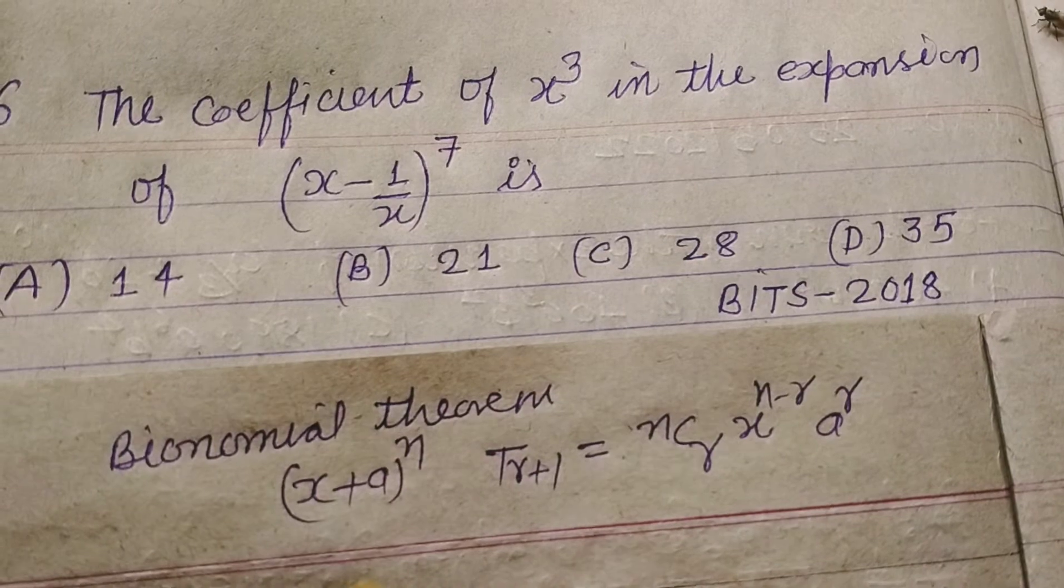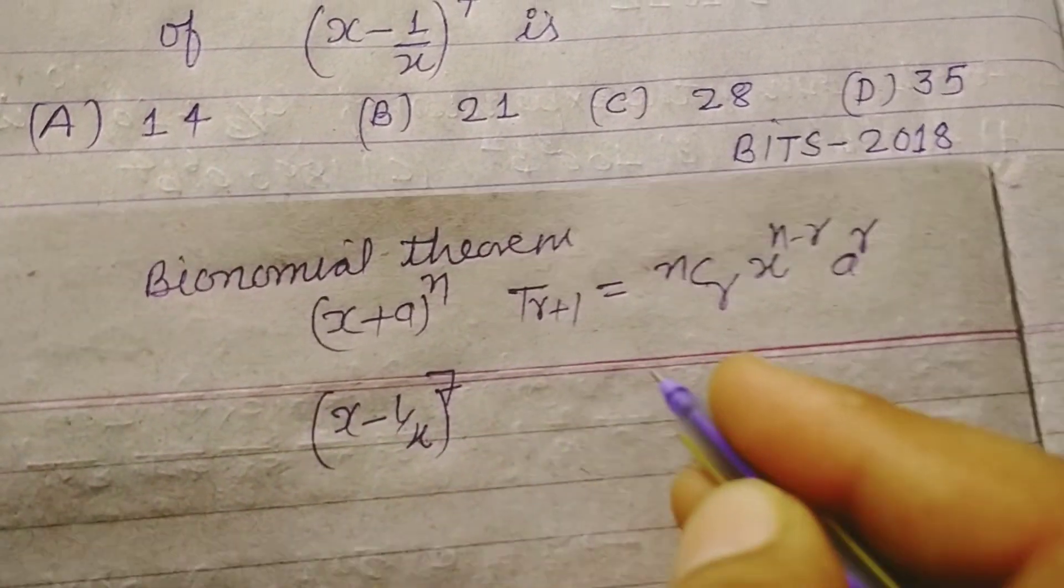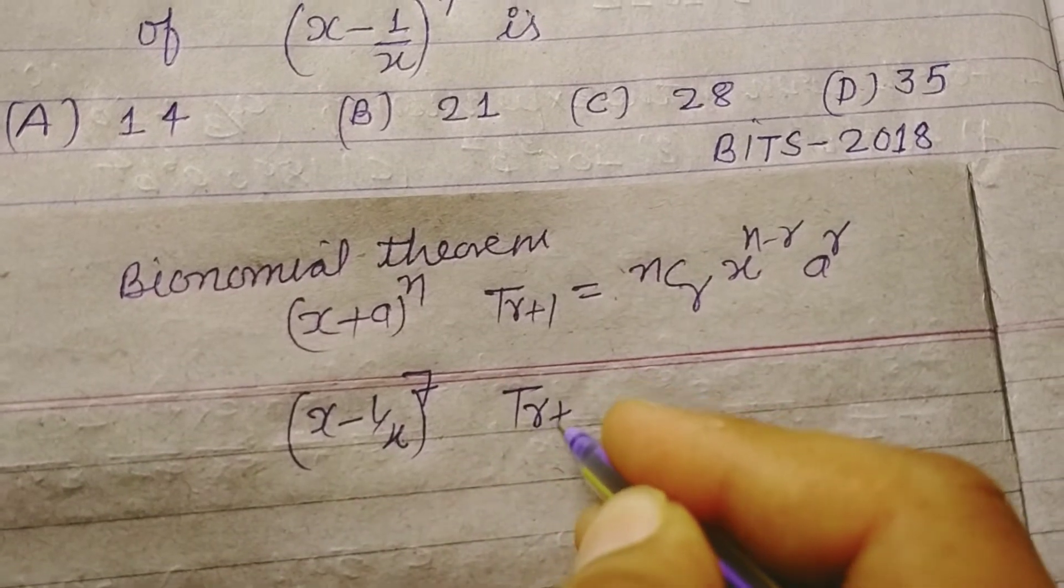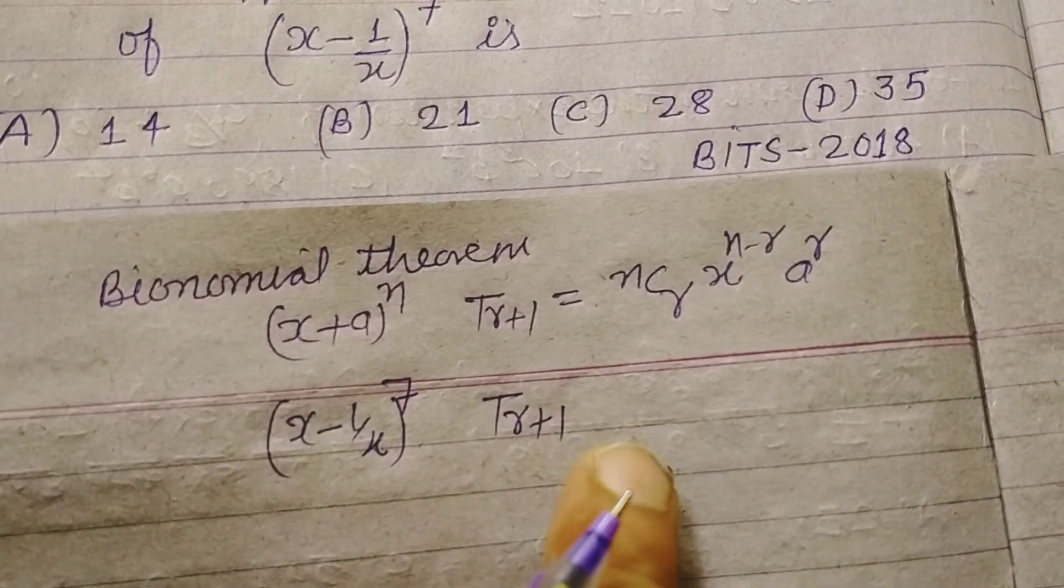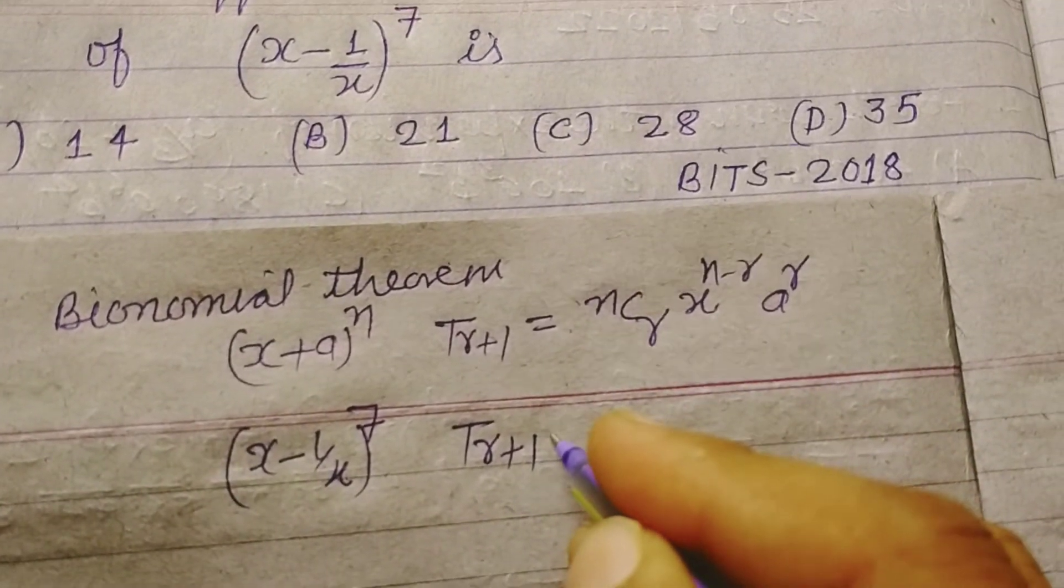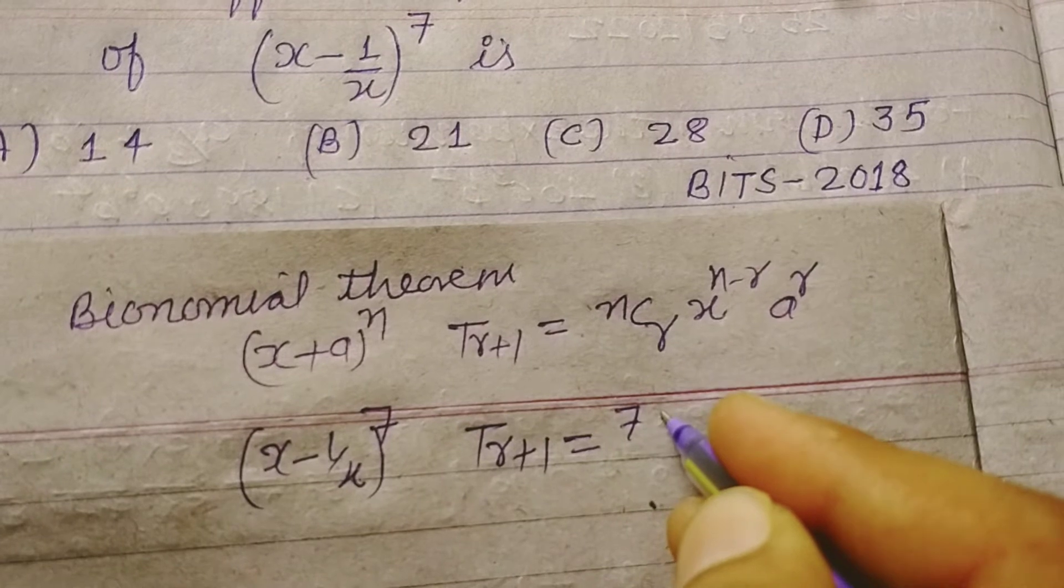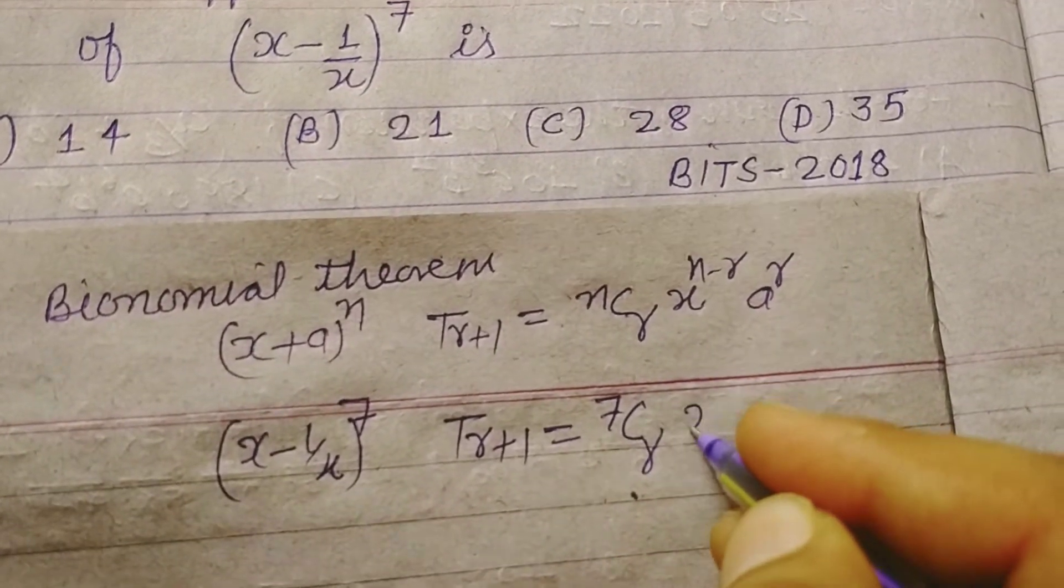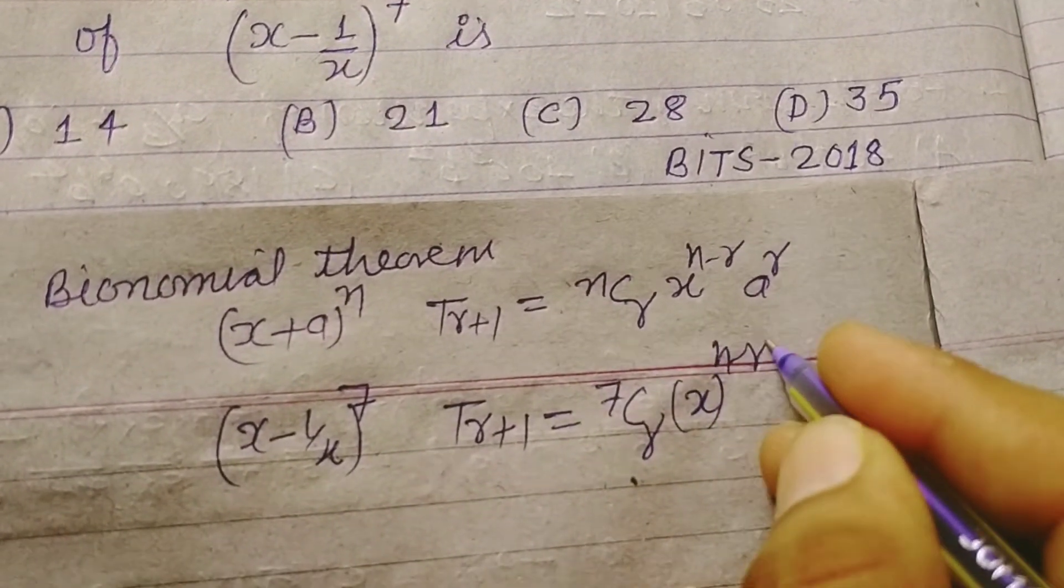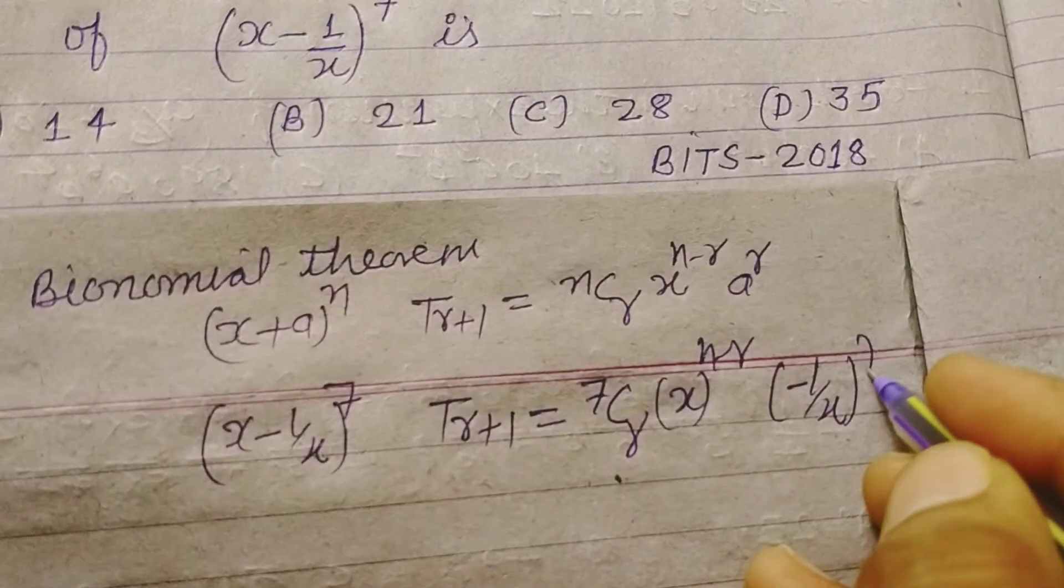So here we have x minus 1 upon x to the power 7. We want to find the r plus 1 term that has x to the power 3. So tr plus 1 where n is 7, x is x, and a is minus 1 upon x to the power r.